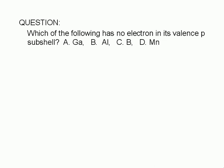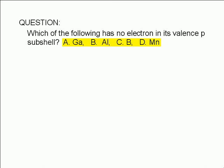Which of the following has no electron in its valence P subshell? A. Gallium, B. Aluminum, C. Boron, or D. Manganese.